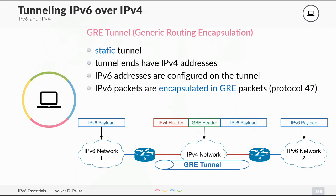Looking at the diagram: you have IPv6 payload on the left, then a router, then an IPv4-only network — let's call it the internet — and another router with another IPv6 network. Between the two routers, over the IPv4-only network, we have a GRE tunnel.